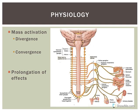Remember that the sympathetic nervous system exhibits divergence - a pre-ganglionic neuron can synapse with up to about 20 post-ganglionic neurons, so you can have simultaneous activation of a number of different structures at the same time.